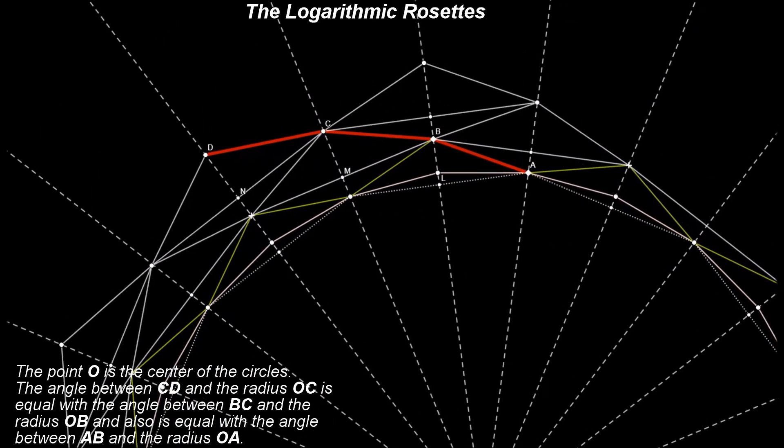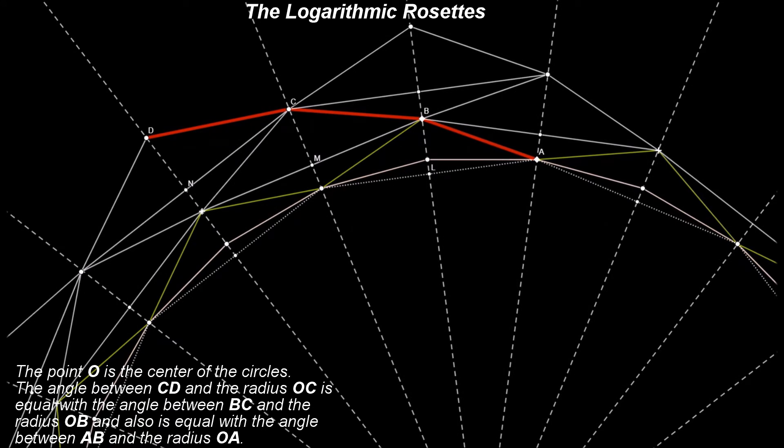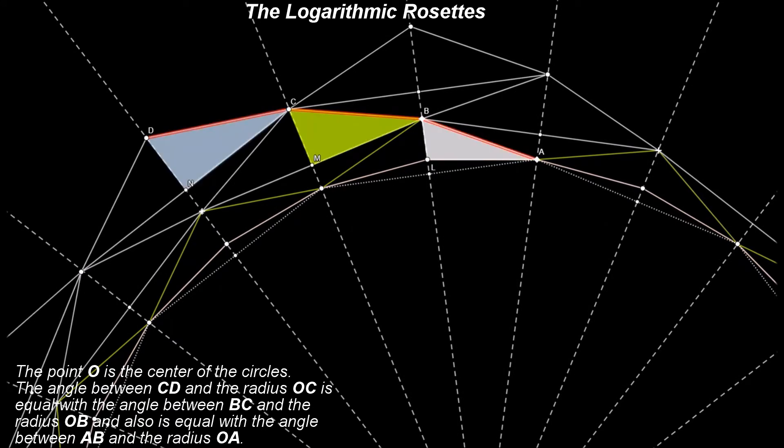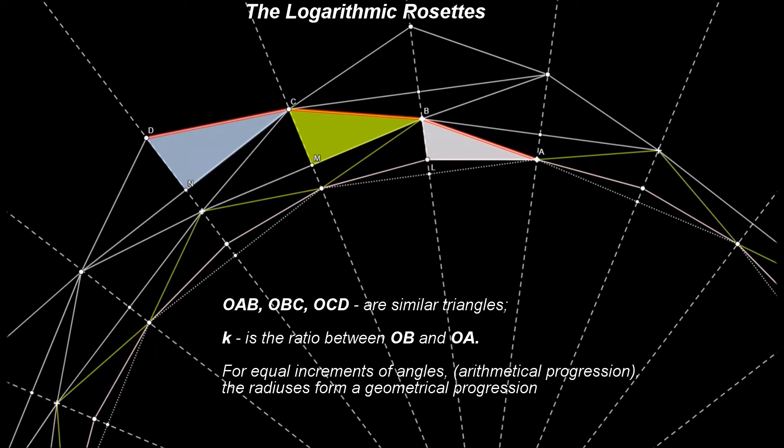There are now three similar triangles: OAB, OBC, and OCD. If K is the ratio between the radiuses OB and OA, then from the similarity mentioned above we have,